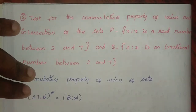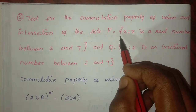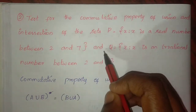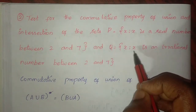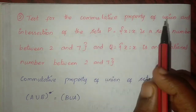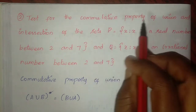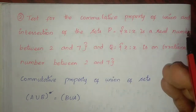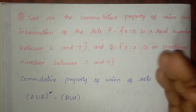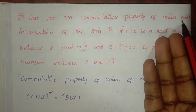Test for the commutative property of the union and intersection of sets. P equals the set of x such that x is a real number between 2 and 7, and Q equals the set of x such that x is an irrational number between 2 and 7. Commutative property of union states: A union B equals B union A.